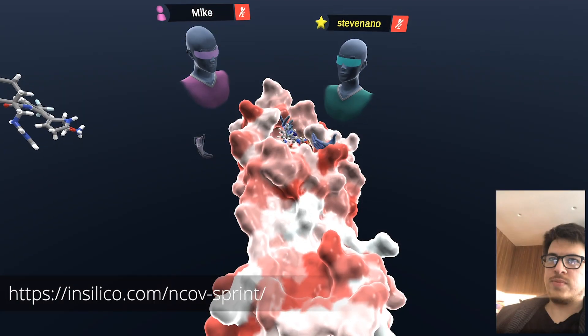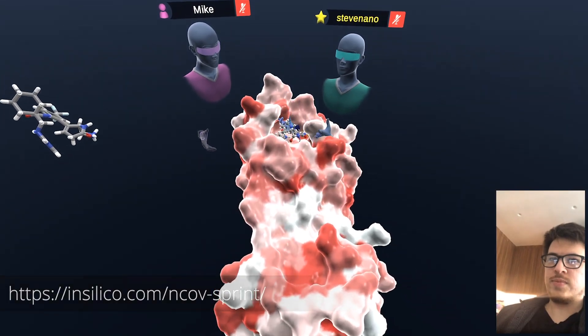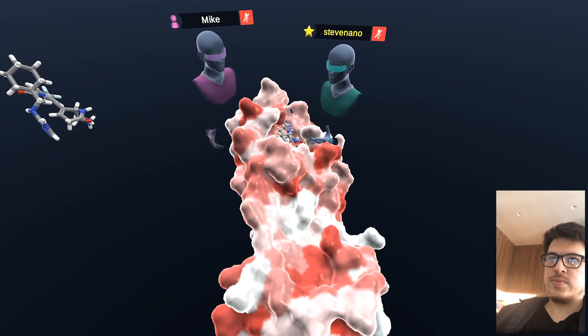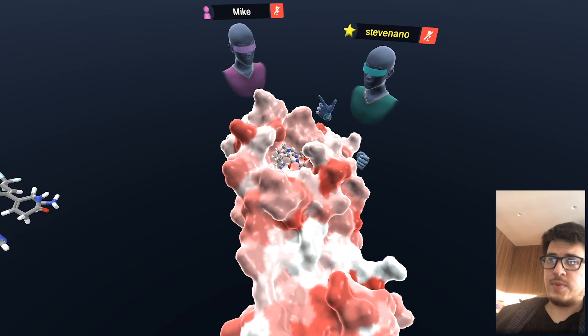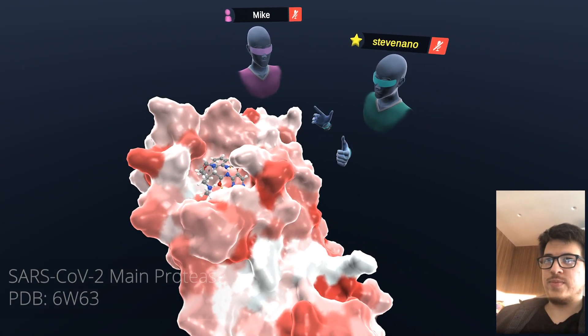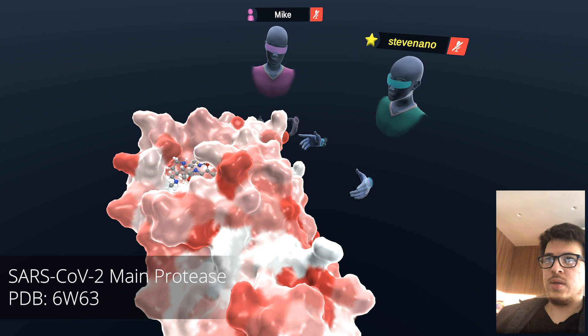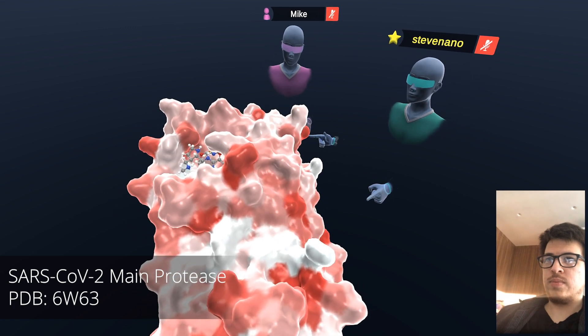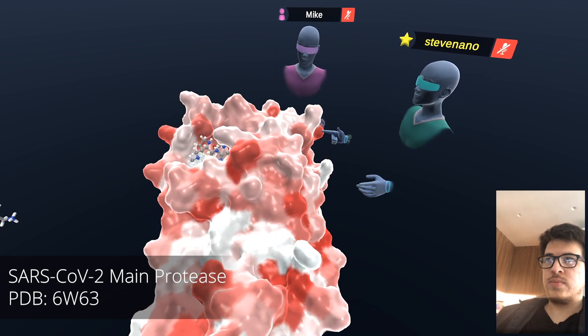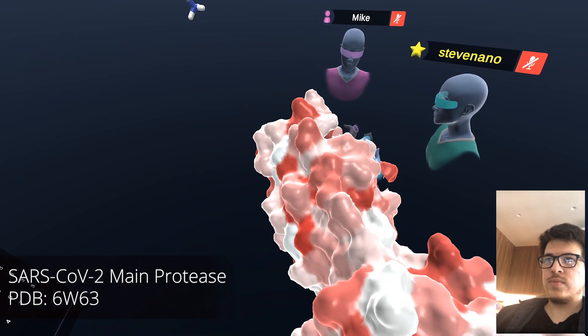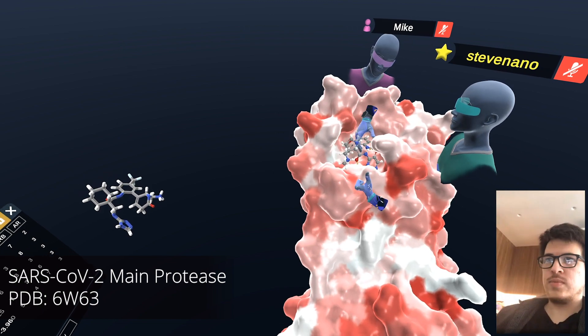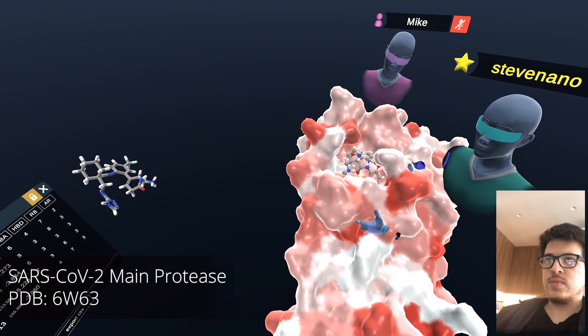So Bogdan doesn't have virtual reality, so Mike and I are in VR. I'm on my desktop on a Rift, Mike's on a Quest, and then Bogdan is joining us via video call. This big protein structure that we see here is the SARS-CoV-2 main protease, and what we can see here is the active center, this nice pocket, and this is the area that their drugs are targeting.